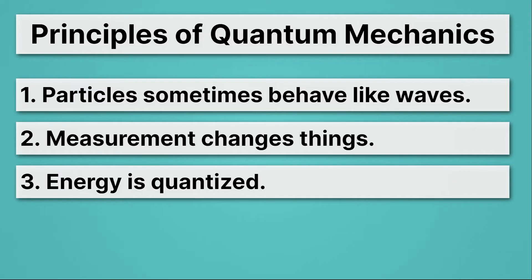So three things to know about quantum mechanics. Particles sometimes behave like waves because they lead to interference. Measurement changes things. So we see that when we measure electrons, they go from waves to particles, and we can't know position and velocity at the same time. And lastly, energy is quantized.